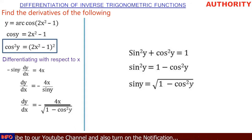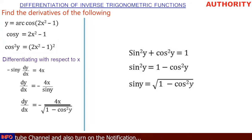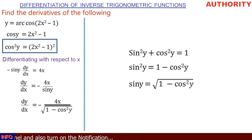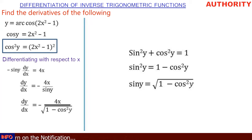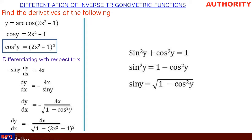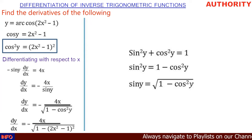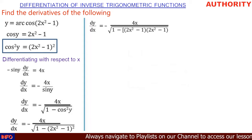When we started, we said cos²y = (2x² - 1)². So we can replace cos²y here. Substituting gives dy/dx = -4x / √(1 - (2x² - 1)²).